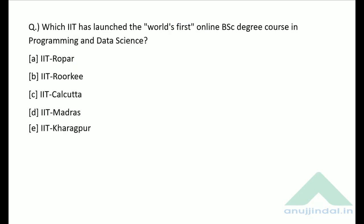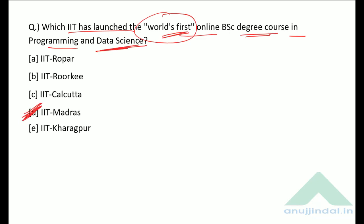Which IIT launched the world's first online BSc degree course in programming and data science? The correct answer is option D — IIT Madras.